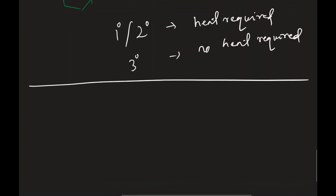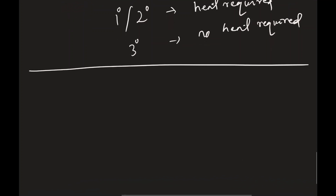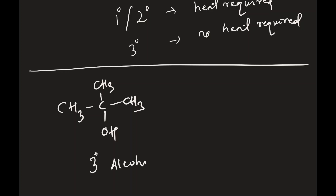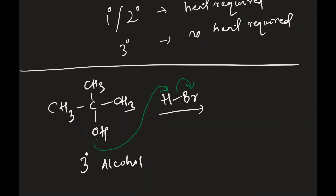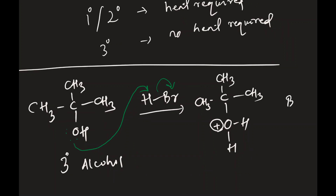For tertiary alcohols, the mechanism will prefer SN1. Let's take a tertiary alcohol and react it with HBr. Drawing the mechanism: the lone pair on oxygen attacks the hydrogen of HBr, and Br⁻ runs away with the electrons. The product of this first step is the oxonium ion — oxygen now has three bonds and carries a positive charge — plus Br⁻. This is in equilibrium.